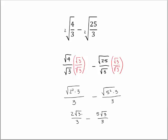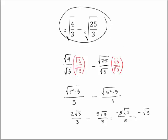Now we've got the same index and the same radicand, so we subtract them. 2 minus 5 is negative 3, and we carry our radicand 3 over the denominator 3. We can simplify — the 3s cancel — and what we end up with is negative square root of 3. We took that expression all the way down to this. Isn't that great?